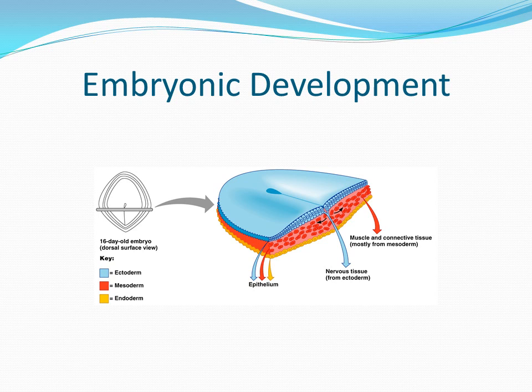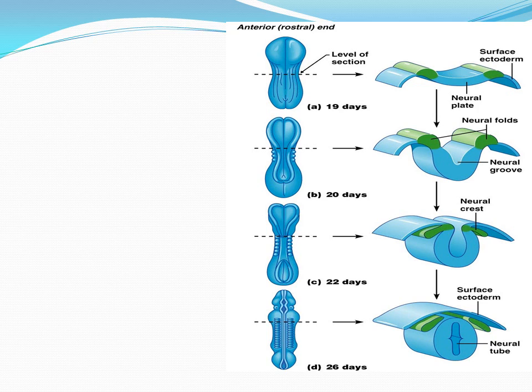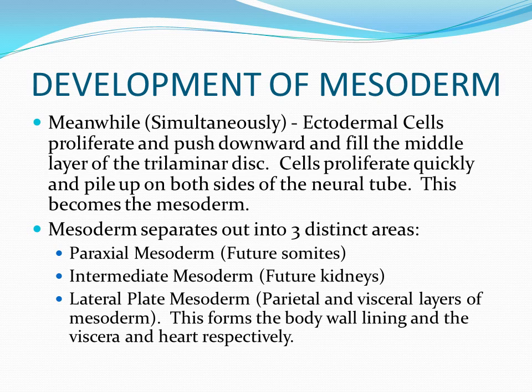In all of these structures, the central nervous system develops along the primitive streak. Meanwhile, the dorsal ectodermal cells are proliferating rapidly and they start to push downward, filling the middle layer of this rapidly thickening trilaminar disc. The cells proliferate quickly and pile up on both sides of the neural tube symmetrically — to the left and to the right — and this eventually becomes what we refer to as the mesoderm.